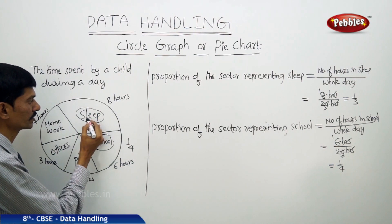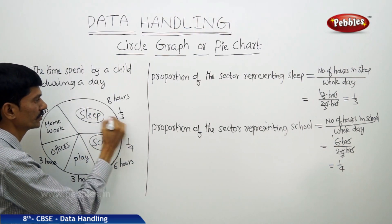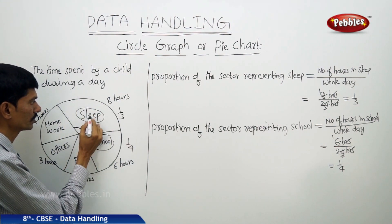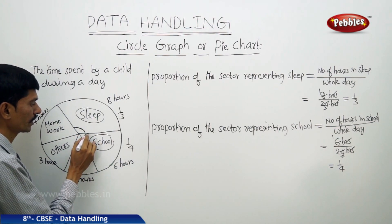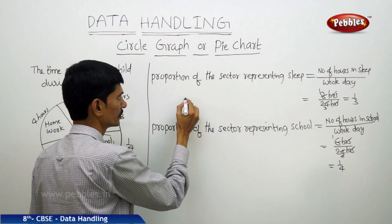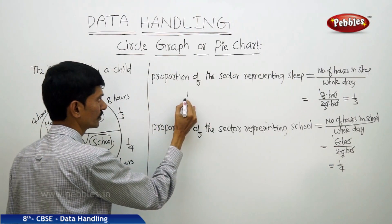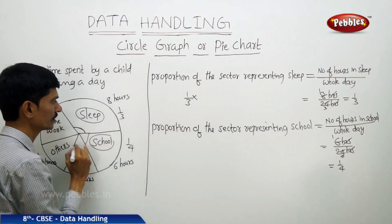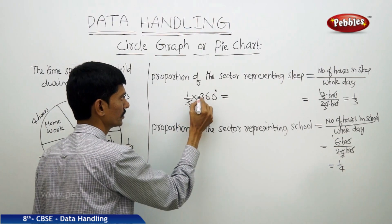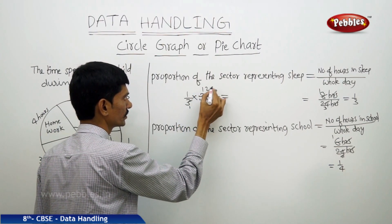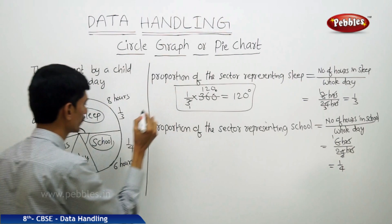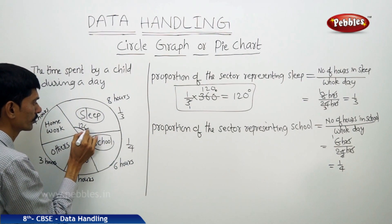The size of the sector representing sleep is one third of the whole circle. So the angle represented by the sector of sleeping is one third of the total angle at the center, which is 360 degrees: one third into 360 equals 120 degrees.